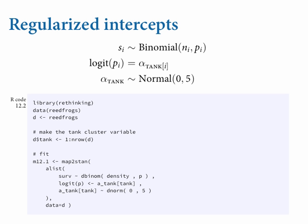You've seen code like this before. Load the reed frogs data, construct the tank index — every row in this dataset is a tank, so it's an aggregated binomial model where the outcome is a count that can be greater than one. You just use the row number as the index variable. Then you fit the model by bracketing 'tank' — map2stan knows what you want to do, makes a vector of parameters, and you get the results, just like the chimpanzee actor example.